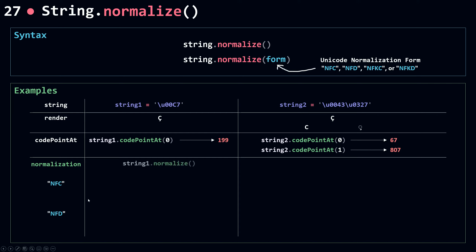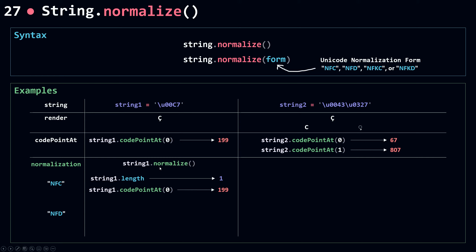That's why we need normalization. If I call string1.normalize with NFC — or without any arguments since NFC is the default — NFC means canonical decomposition followed by canonical composition. It first decomposes the character and then recomposes it back into a single character. Calling string1.length after normalization returns 1, and codePointAt(0) returns 199. Note that normalize doesn't mutate string1 — it returns a new string — but let's say we reassign string1 to the normalized result.